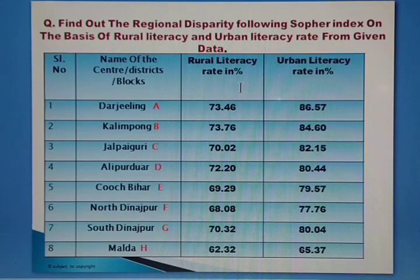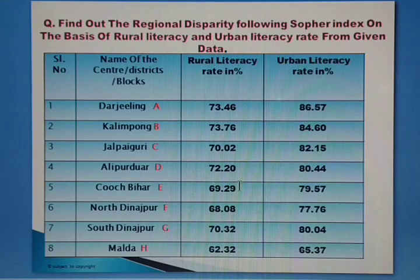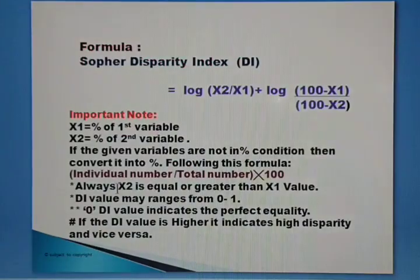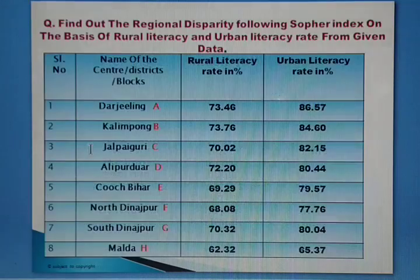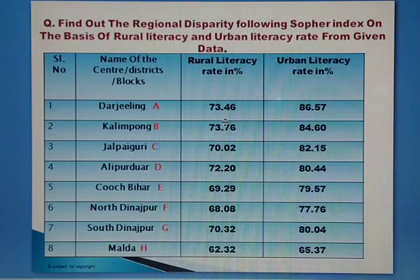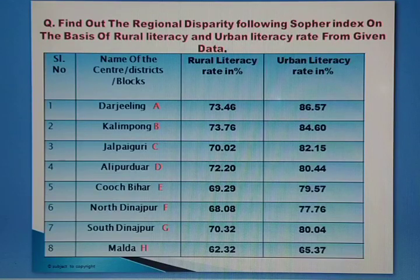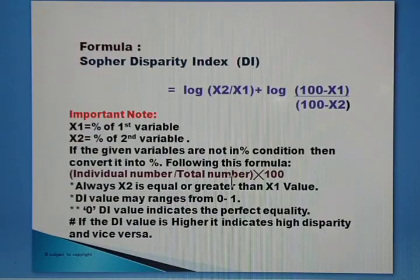If the given data is not already in percentage form, you need to calculate the percentage first. The formula is: individual number divided by total number, multiplied by 100. So take the individual value, divide by its summation, multiply by 100, and you will get the percentage for each variable.